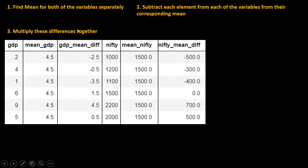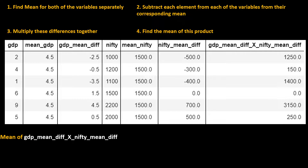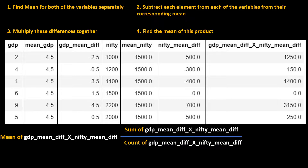The next step is to multiply these differences together — for example, 2.5 multiplied by minus 500. When you do this for all observations, you get the product column. Then find the mean of this product column: sum up all the observations and divide by the count of observations. Here the sum comes to 6200, the count is 6, giving us the covariance value.